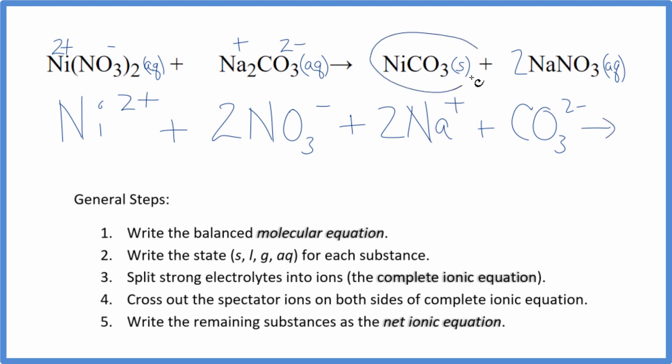For net ionic equations, we don't split solids apart. So we're just going to write in the products, NiCO3, keep it together. And then sodium plus the whole nitrate negative, two sodium ions again. And then we have two nitrate ions, just like in the reactants. So this is the complete or total ionic equation.